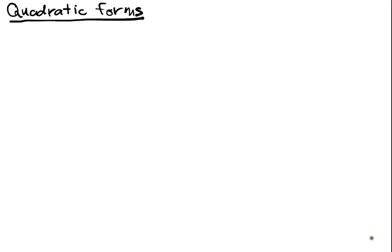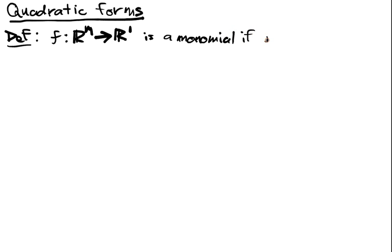In this video we're going to talk about multivariate polynomials and in particular quadratic forms. Definition: F from R^M into R^1 is a monomial if F of X1 up to XM